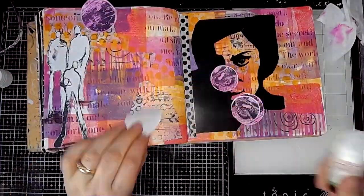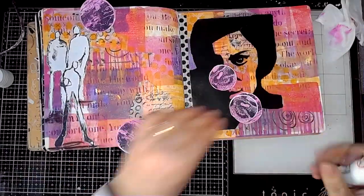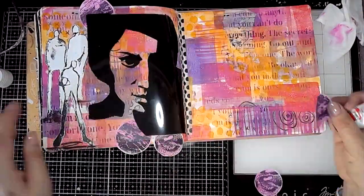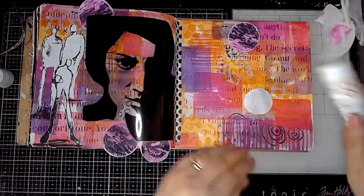And then I just go about arranging these circles on the page. Again, just adding more interest to the page and breaking up the background a little bit.